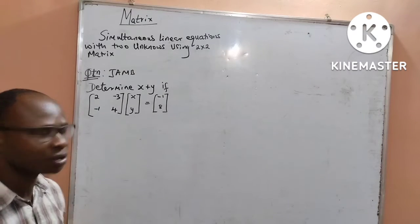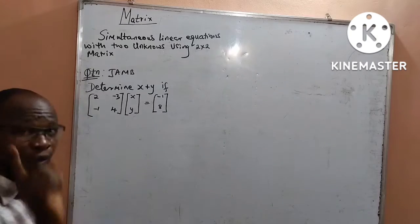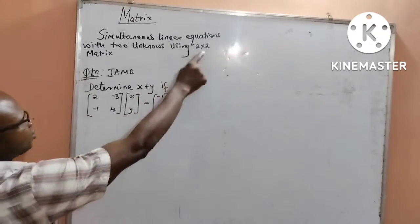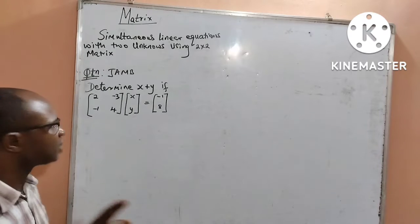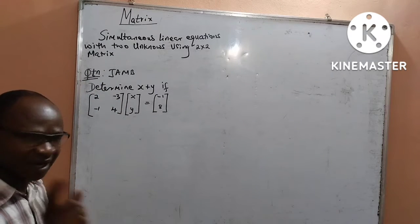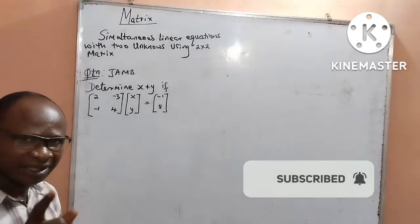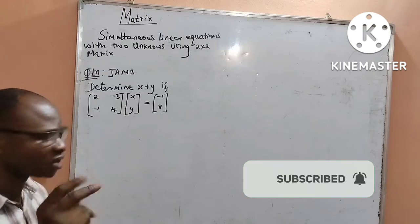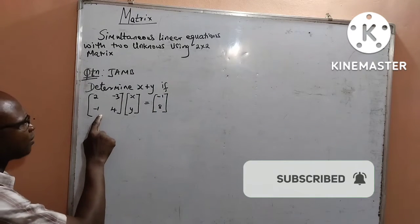We shall be looking into simultaneous linear equations with two unknowns using 2x2 matrix. We want to solve a past JAMB question, and the question is given to determine x plus y. X and y are the two unknowns that we are expected to get in this 2x2 matrix.